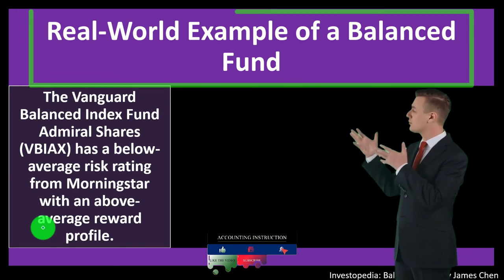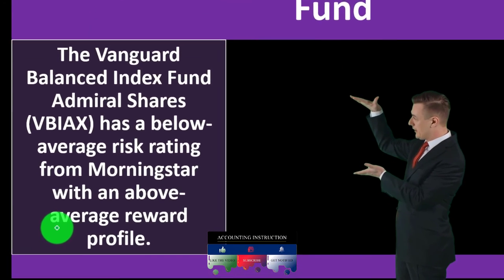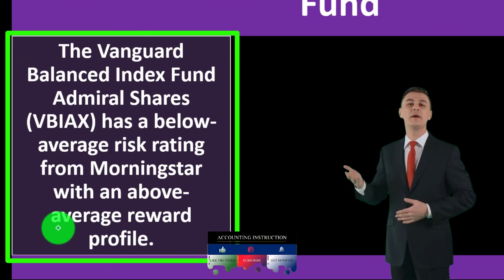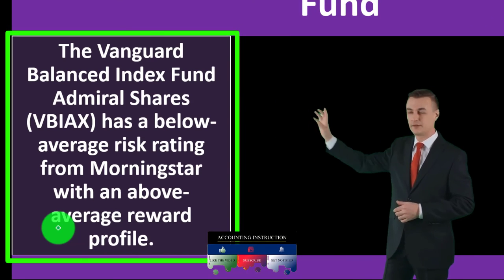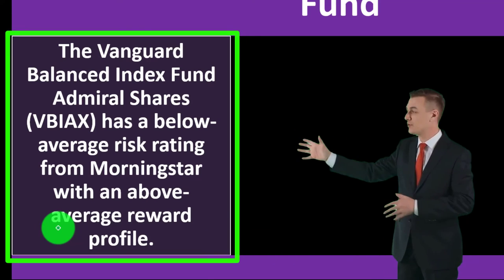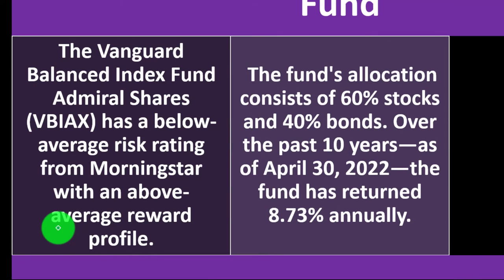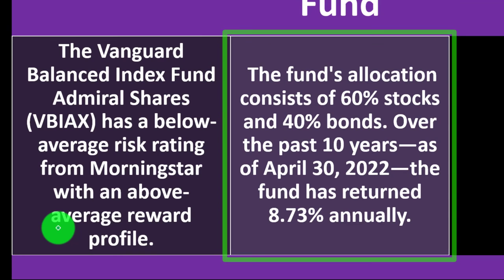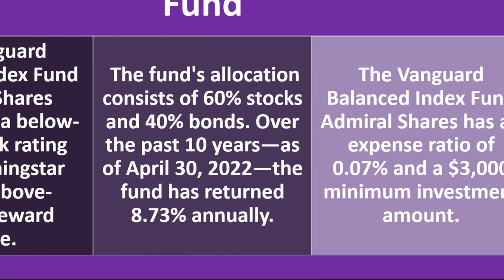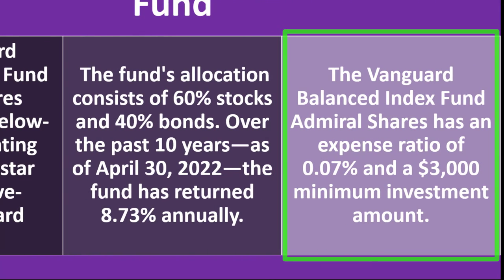A real-world example of a balanced fund is the Vanguard Balanced Index Fund Admiral Shares (VBIAX), which has a below-average risk rating from Morningstar with an above-average reward profile. The fund's allocation consists of 60% stocks and 40% bonds. Over the past 10 years as of April 30th, 2022, the fund has returned 8.73% annually. The Vanguard Balanced Index Fund Admiral Shares has an expense ratio of 0.07% and a $3,000 minimum investment amount.